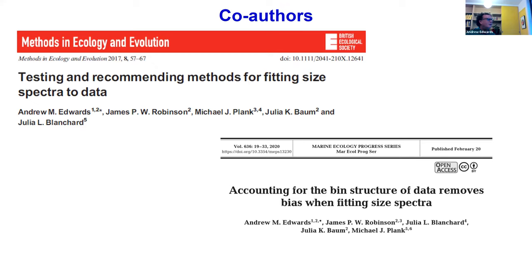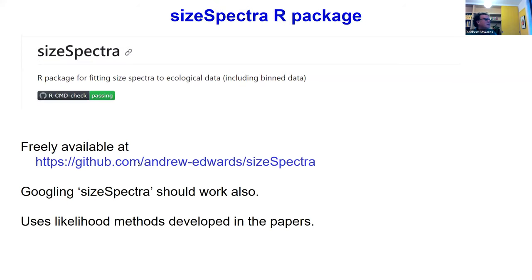These are two papers I want to acknowledge my co-authors on — from 2017 and 2020. James Robinson was a PhD student at the University of Victoria with Julia Baum. Michael Plank is a mathematician in New Zealand, and Judith Blanchard is an ecologist based in Tasmania. The size-spectra R package is freely available on GitHub — you can just Google 'sizespectra' as one word and it should come up. The main thing it does is use the likelihood methods we developed in the papers.